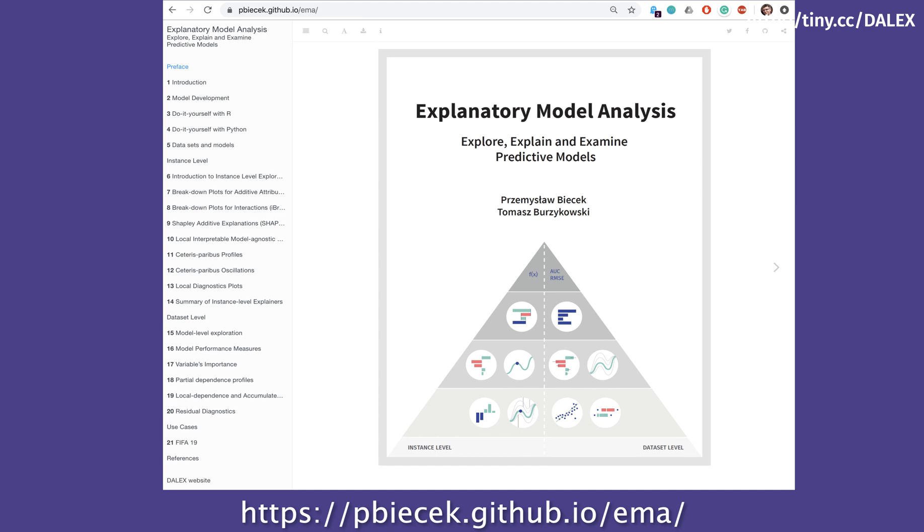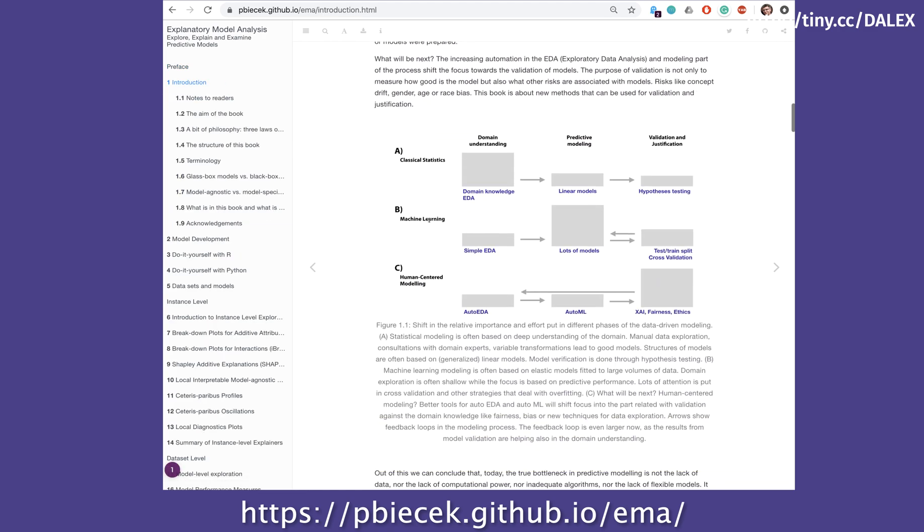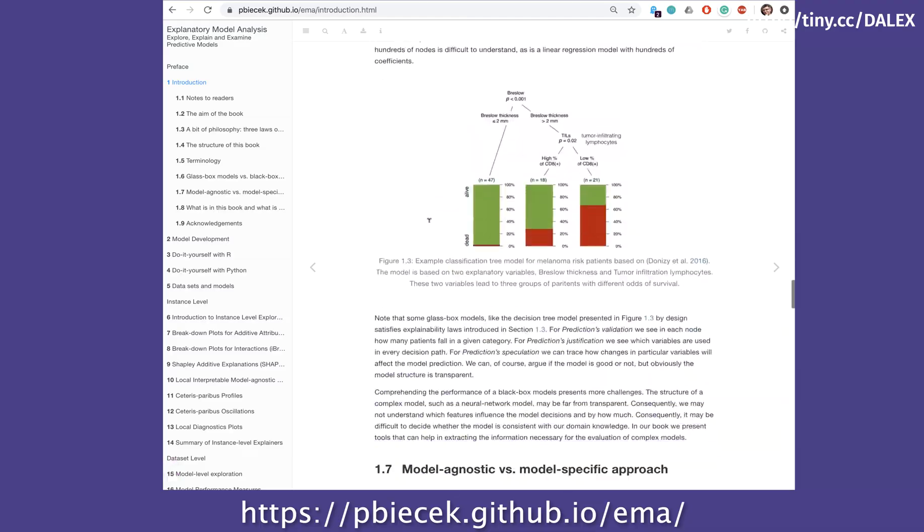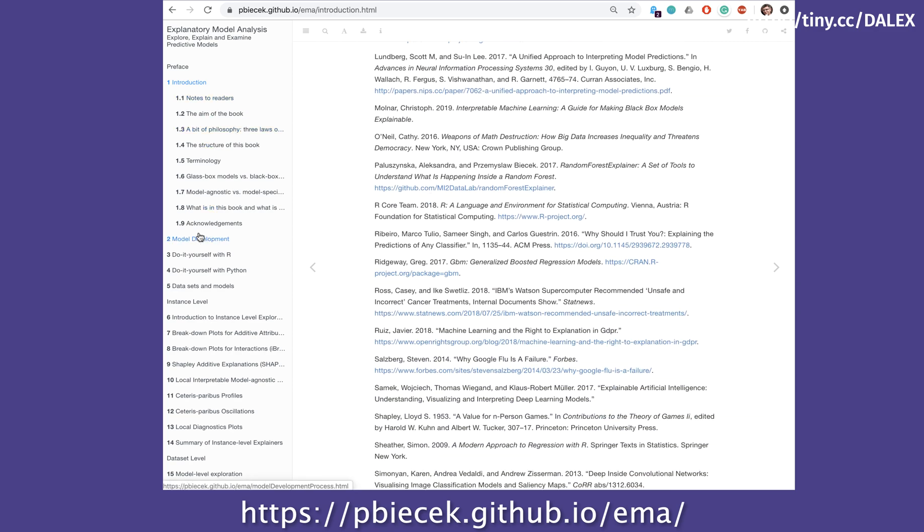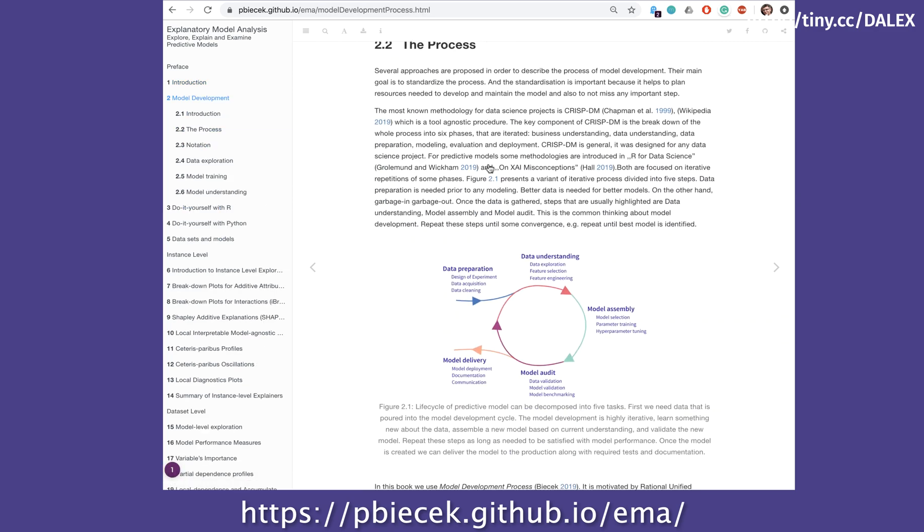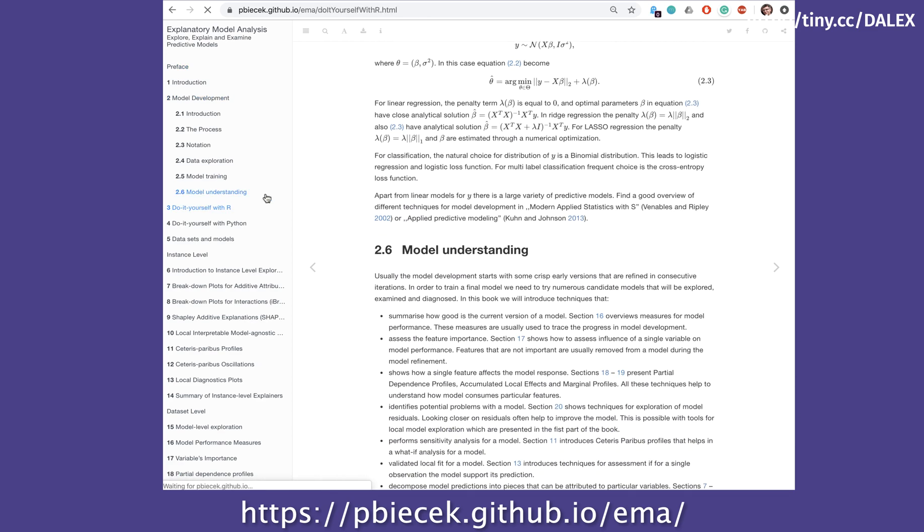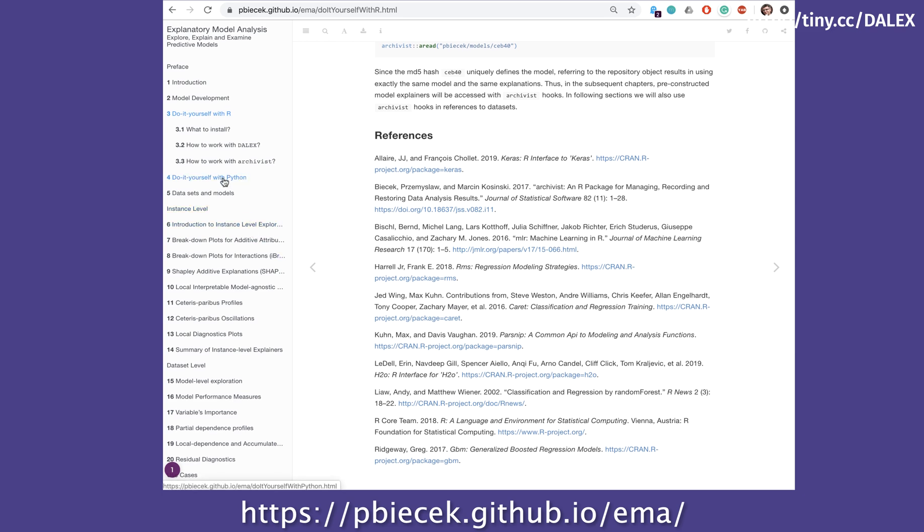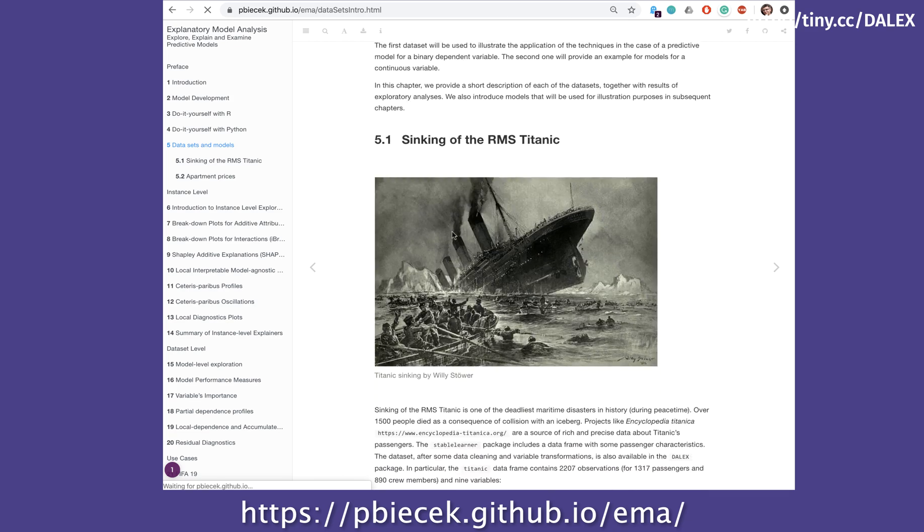The methods listed in this pyramid are described in detail in the e-book Exploratory Model Analysis, available at github.com/pavitzyk/ema. In this e-book, for each method you will find the intuition, methodological details, and examples for different classification and regression models.